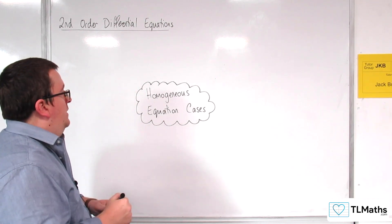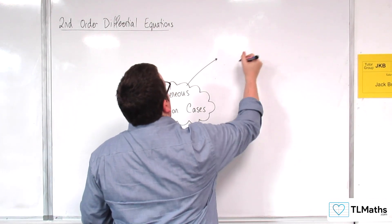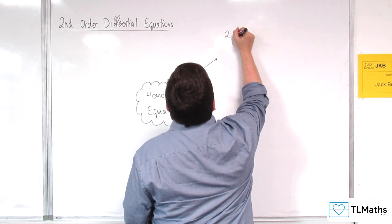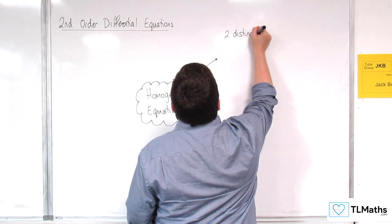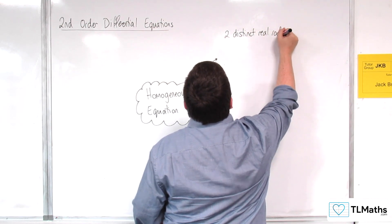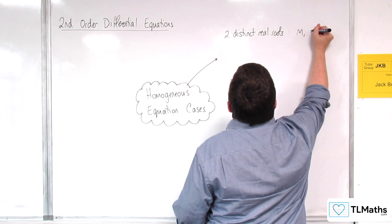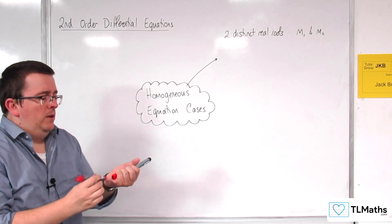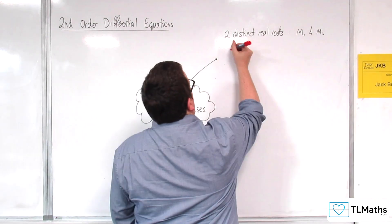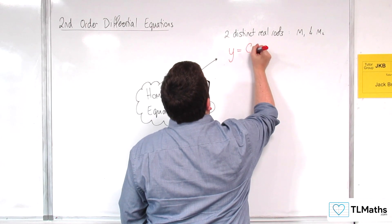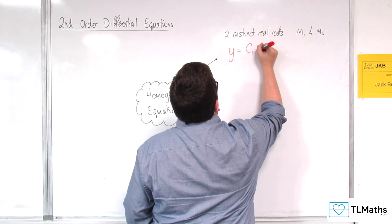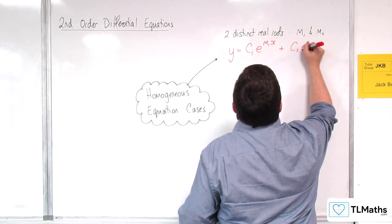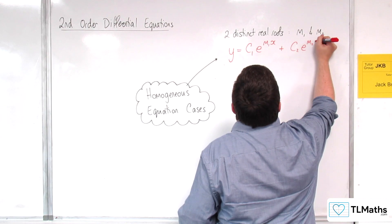Either the auxiliary equation gives you two distinct real roots for the auxiliary equation, let's call them m1 and m2. In which case, the general solution will be of the form y is equal to some constant c1 times e to the power of m1x plus some constant c2 e to the power of m2x.